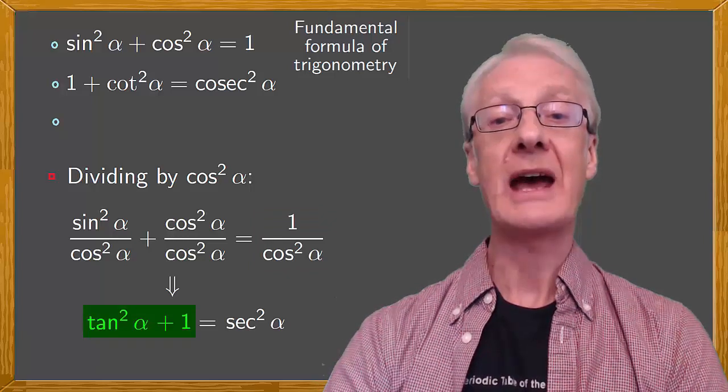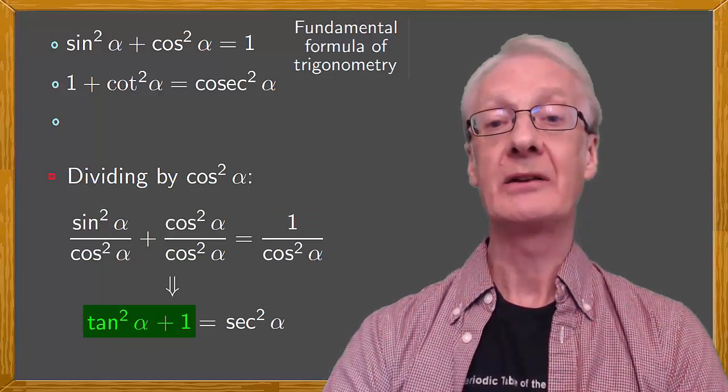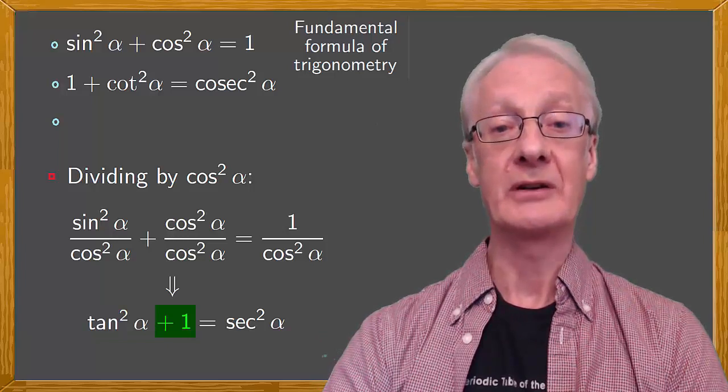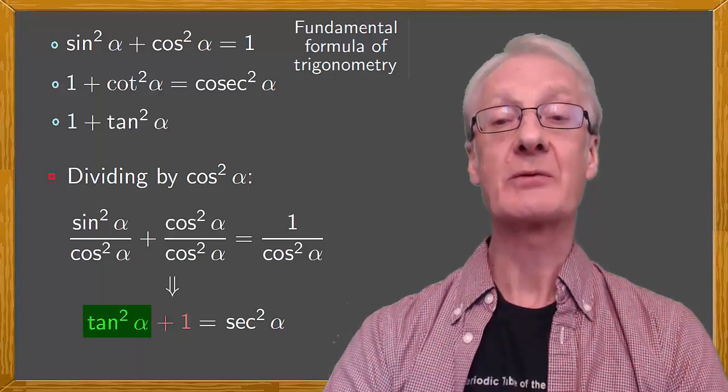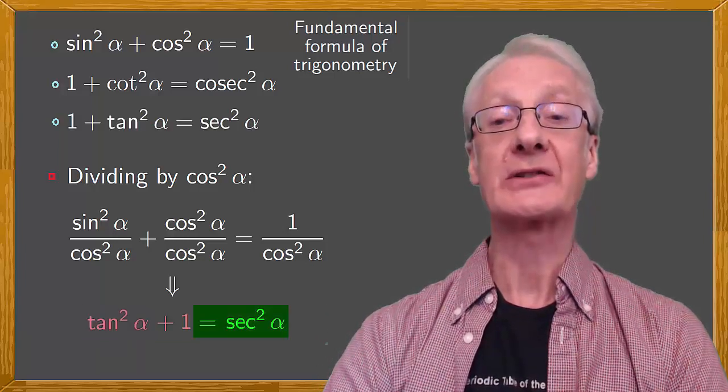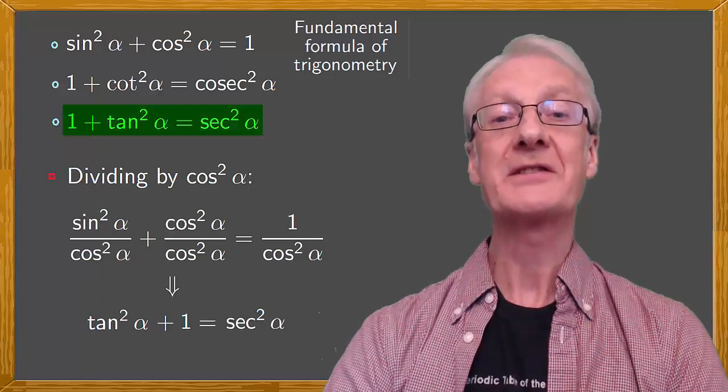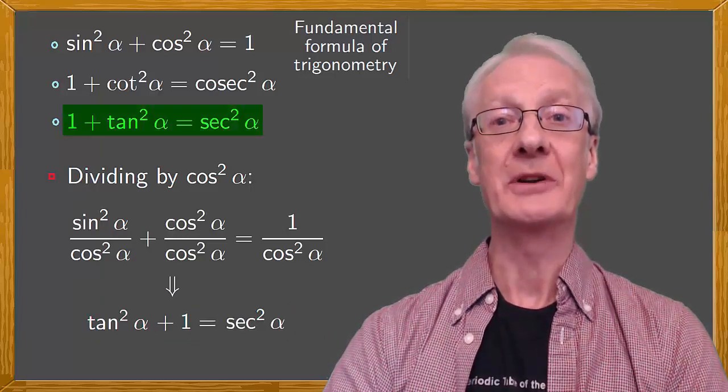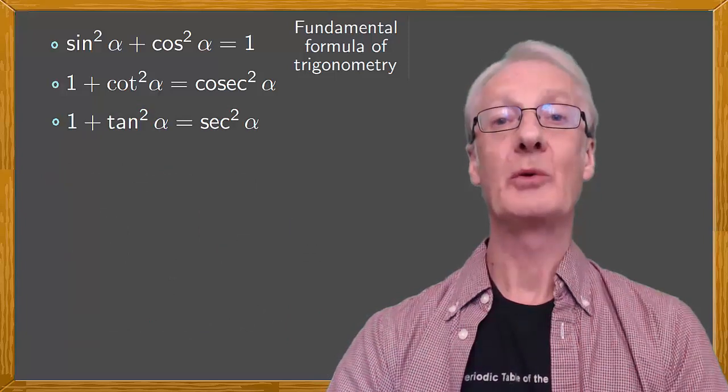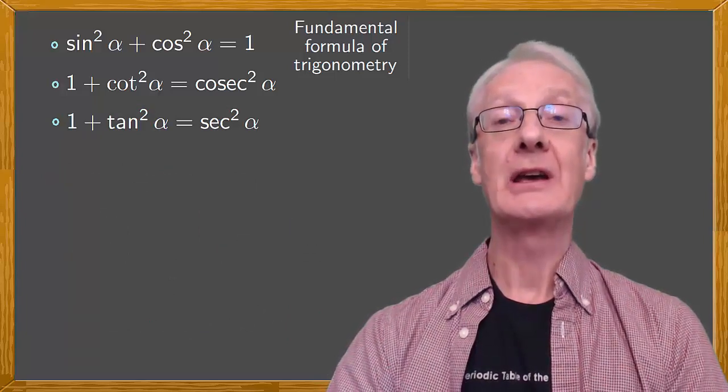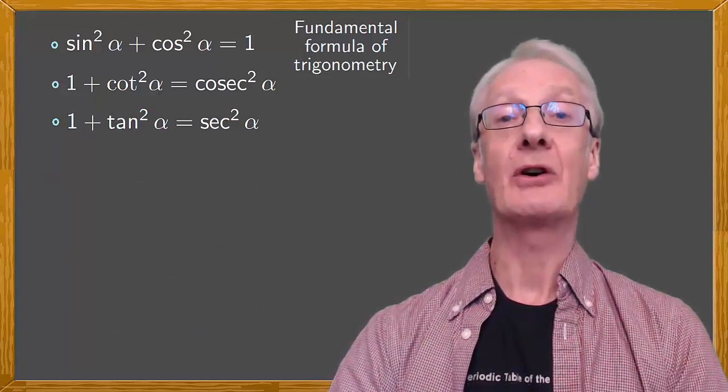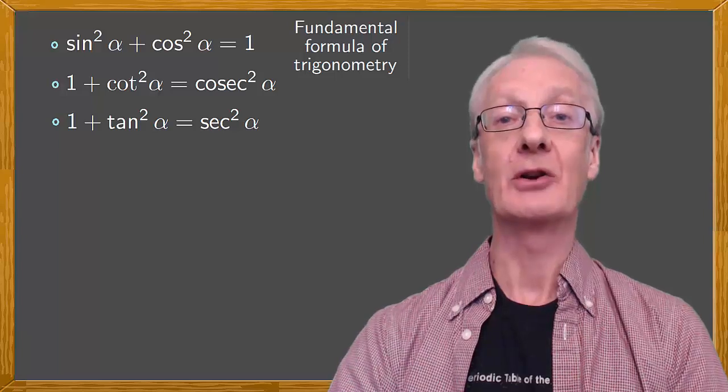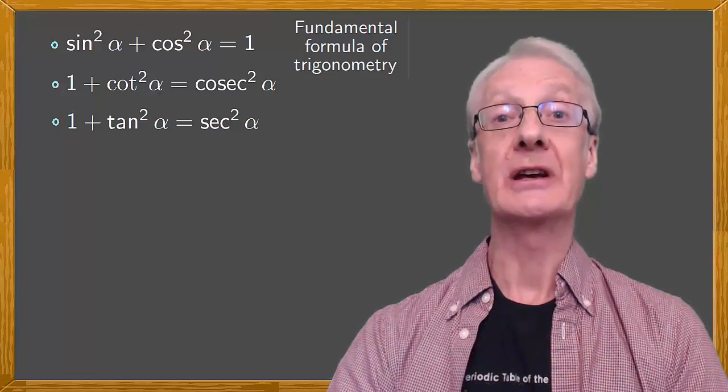We'll switch around the addends on the left side, so that the 1 appears in front, giving 1 plus tan squared alpha equals sec squared alpha. And there's the second of our derived formulas. Remember, when using these formulas, it's important to take account of the quadrant to which the angle belongs, and to choose the appropriate sign.